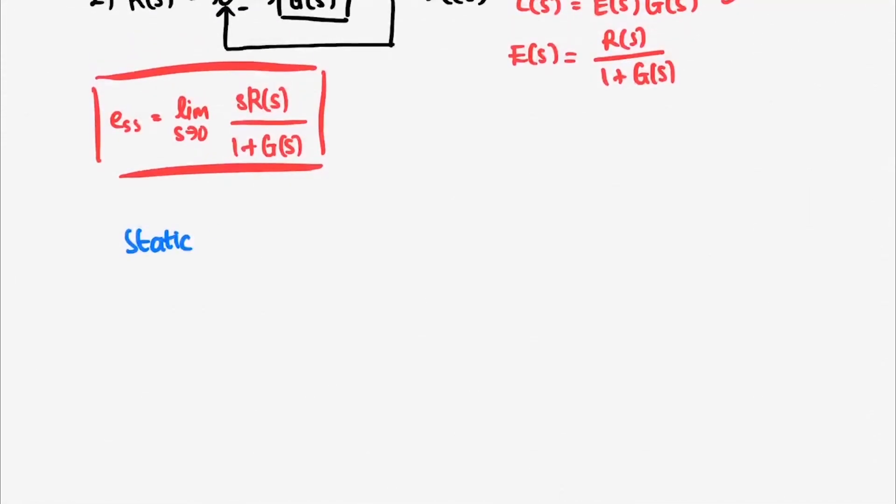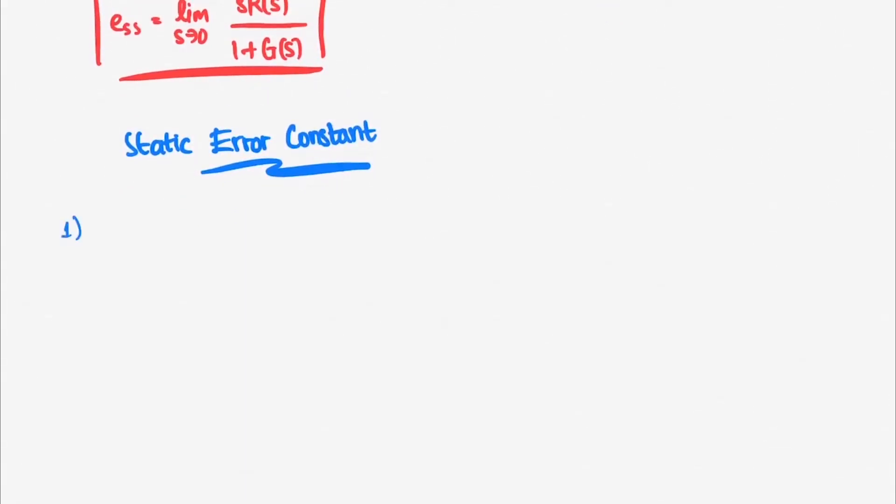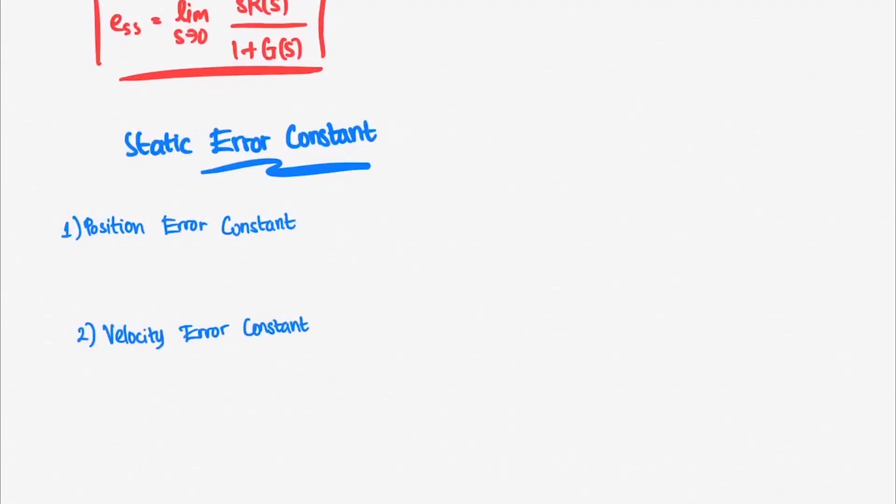There's one more important thing you should know in this part, that is the static error constant. There are three types of static error constant, the position error constant or Kp, velocity error constant Kv, and acceleration error constant or Ka.